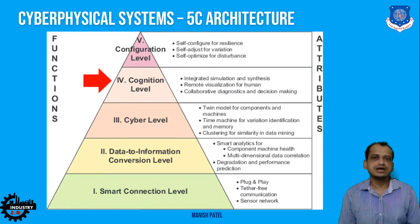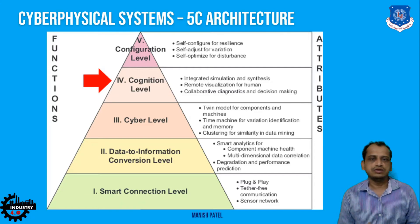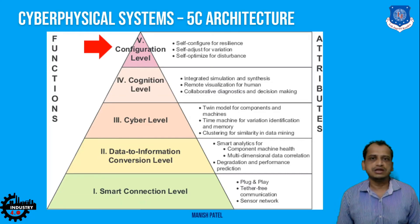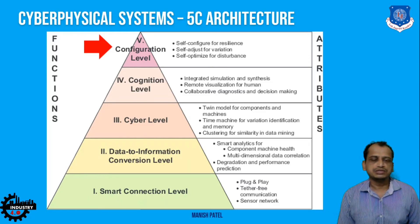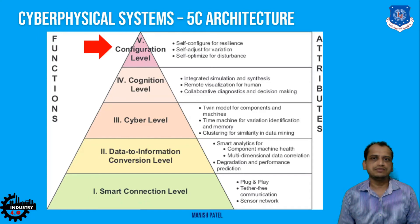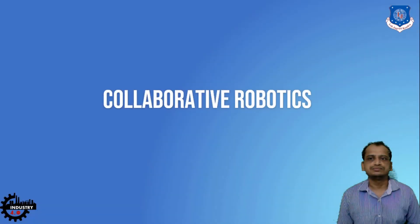At the Cognition level, you have decentralized decision-making and diagnostics using cyber-level data, so machines can think and adjust on their own. The final C is the Configuration level, where machines can self-adjust, self-optimize, and self-configure based on conditions. This creates a loop where data is fed from sensors to the virtual world or cloud, and from the cloud, optimized decisions are fed back to physical devices. This is the formal architecture of the cyber physical system.